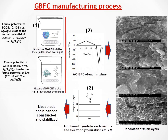We took advantage of this ACEPD technique to manufacture the biofuel cell in three steps. The first step consists of absorbing the enzymes and the redox mediators onto the multiwall carbon nanotubes. Then we perform the ACEPD of each mixture to form thick layers, as depicted by the SEM images. The final step is the electropolymerization of an outer layer of polypyrrole, which serves the purpose of stabilization as well as increasing the electrical conductivity.